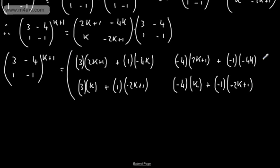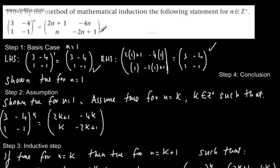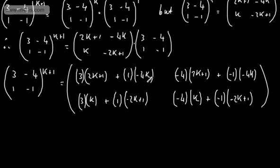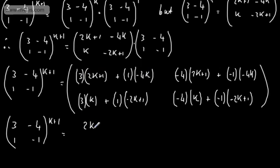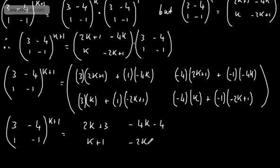Now expanding and simplifying: the top-left entry gives 6k - 4k + 3 = 2k + 3; the top-right gives -8k - 4 + 4k = -4k - 4; the bottom-left gives 3k - 2k + 1 = k + 1; and the bottom-right gives -4k + 2k - 1 = -2k - 1.